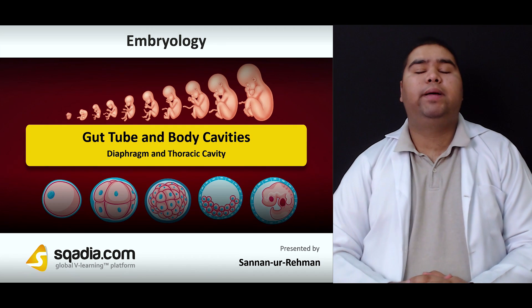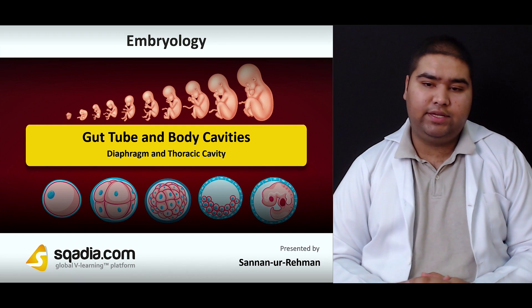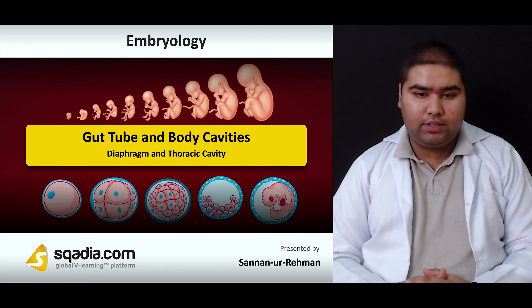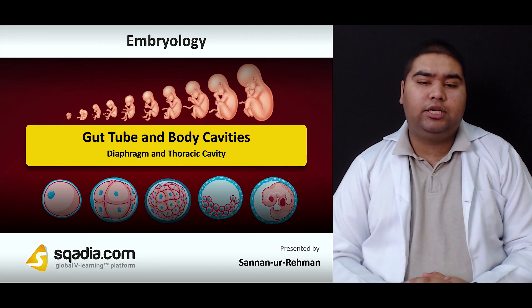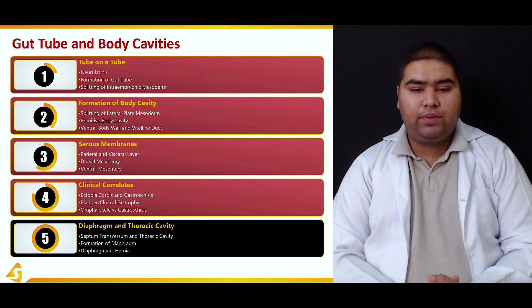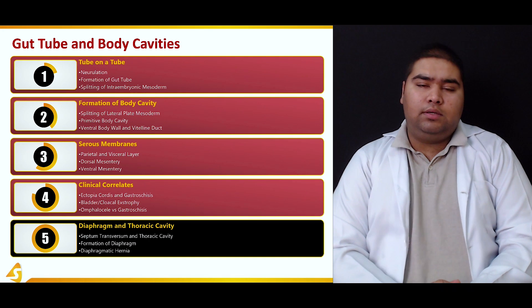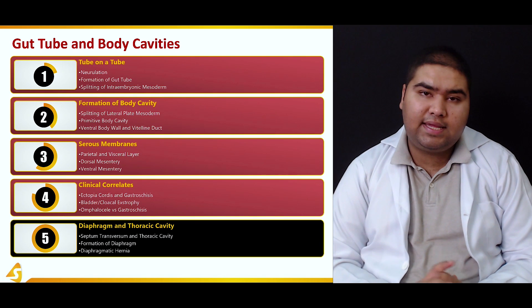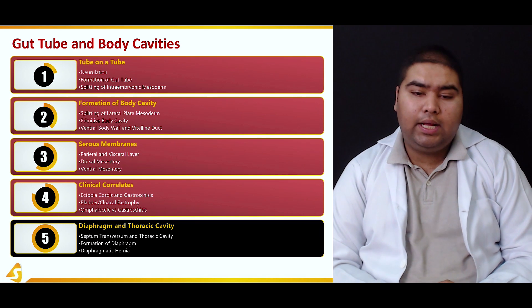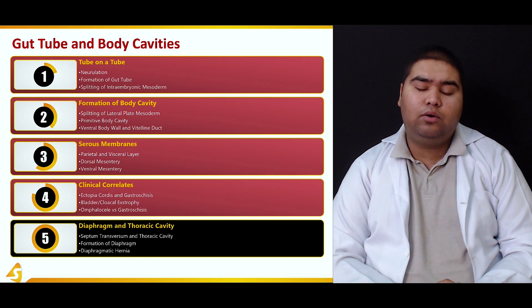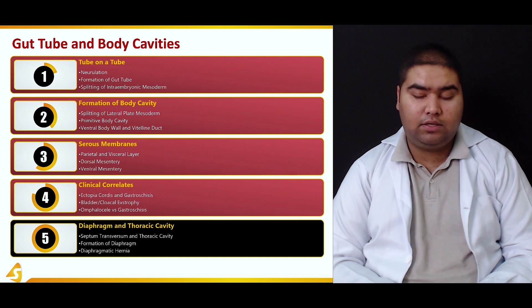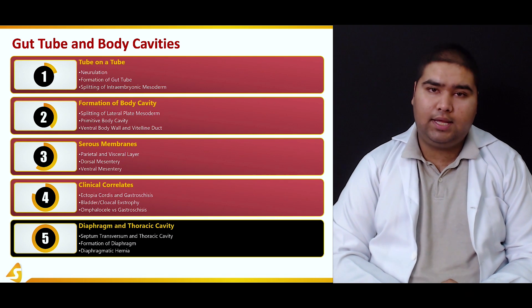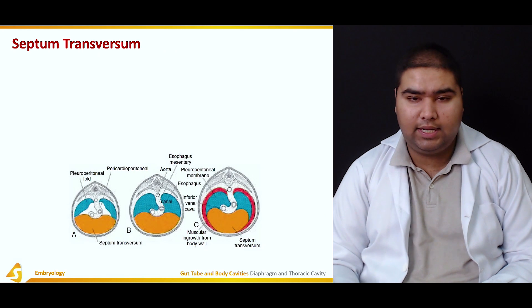Hello everyone. We are talking about gut tube and the body cavities. This is the last section in this presentation. It includes diaphragm and thoracic cavity. We will take a look at the development of the diaphragm, how septum transversum and thoracic cavity come into play, how the diaphragm is formed, and what are the clinical correlates of the diaphragm. It is a very nice, very sweet, and very important lecture.